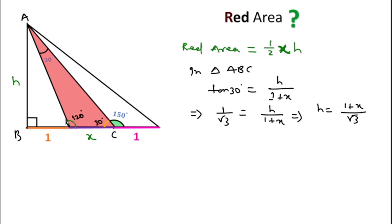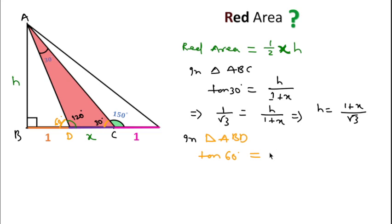Since this angle is 120 degrees, the supplementary angle here is 60 degrees. In right angle triangle ABD, tan 60° = perpendicular AB / base BD, where BD equals 1. Since tan 60° = √3, we get h = √3.